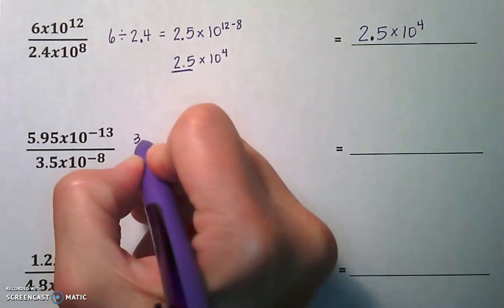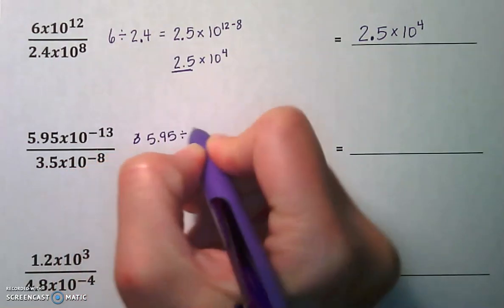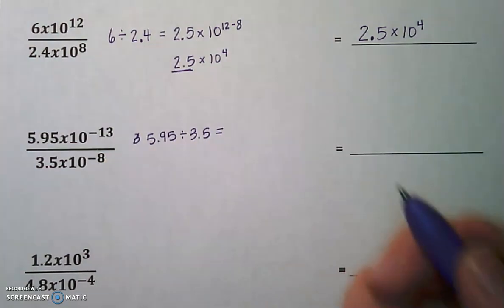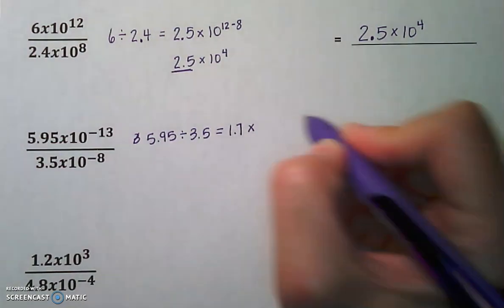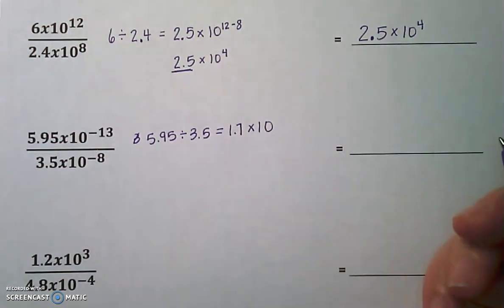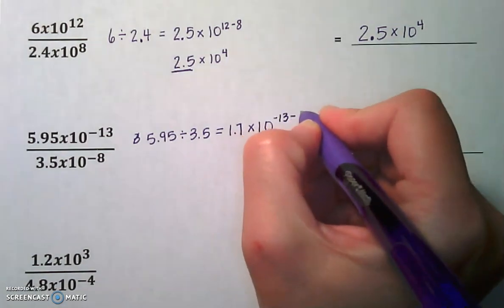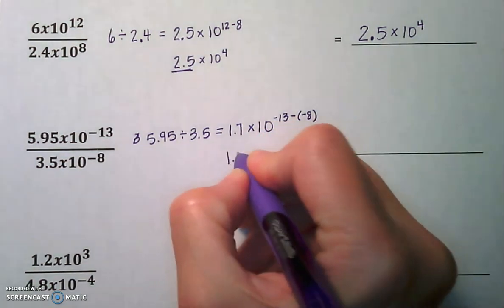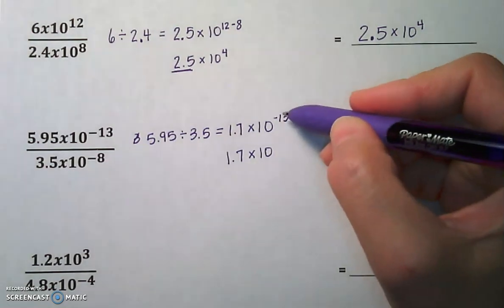We're going to put in our calculator 5.95 divided by 3.5, and when we put those in the calculator, we get 1.7. We are going to keep that base of 10, and we are going to subtract the exponents with their sign. So that's going to be negative 13 minus negative 8. All right, so we get 1.7 times 10 to the, let's double check our integer work here.